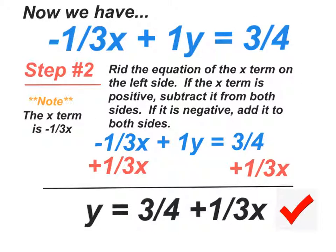Step number 2, now we have to rid the equation of the x term over here on this side. So now what we've got to do is we have to do the opposite of minus 1 third x. And that is plus 1 third x to the left and right. When this simplifies, we get 1y or y is equal to 3 fourths plus 1 third x.